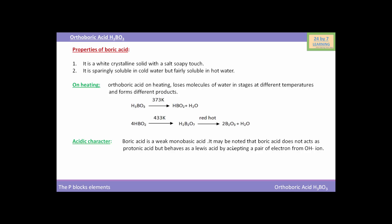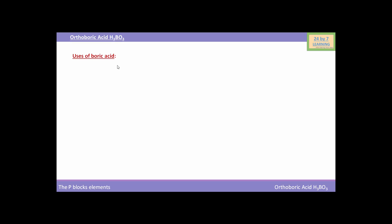Now we come to the acidic character of boric acid. Boric acid is a weak monobasic acid. It does not act as a protonic acid but behaves as a Lewis acid by accepting a pair of electrons from the hydroxyl ion. As it removes only one proton it is a weak monobasic acid. When boric acid reacts with water it accepts an electron pair from the hydroxyl ion, acting as a Lewis acid, and forms hydronium ion H₃O⁺ and a basic solution.